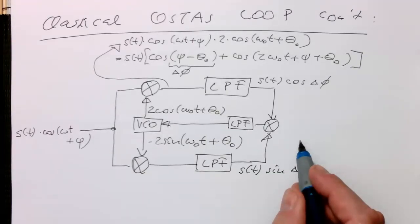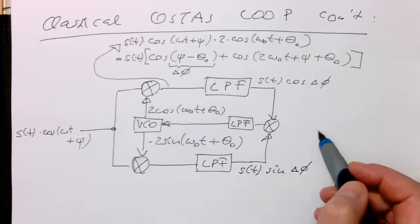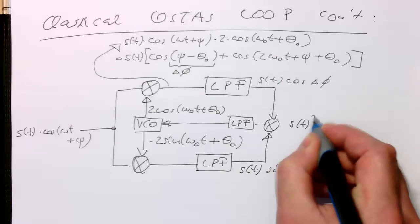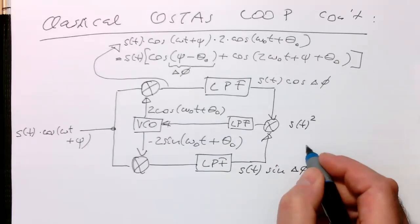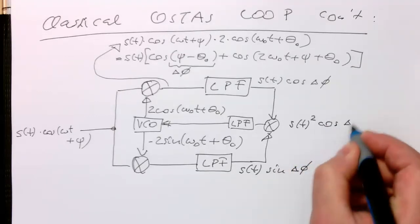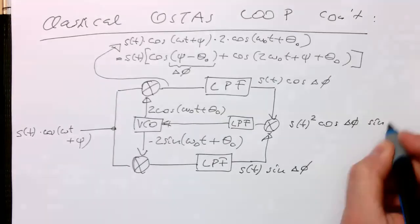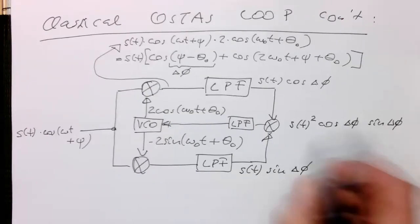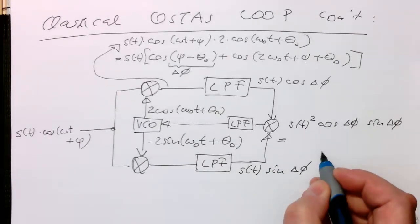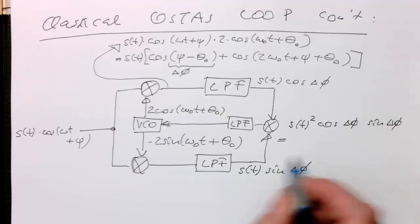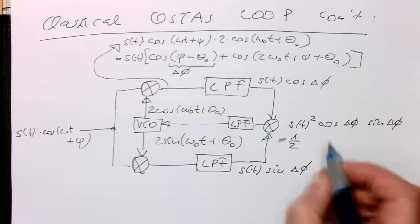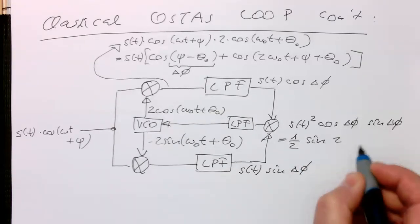And so then the only thing what we need to do is we just need to multiply these two signals here to get this output here. So in the middle, then we're getting S of t squared. And then we're getting cosine delta phi multiplied by sine delta phi. So that's what we are getting here in the middle. So we can again change that with our standard trigonometric operations here. And then this gives us here half of sine 2 delta phi.